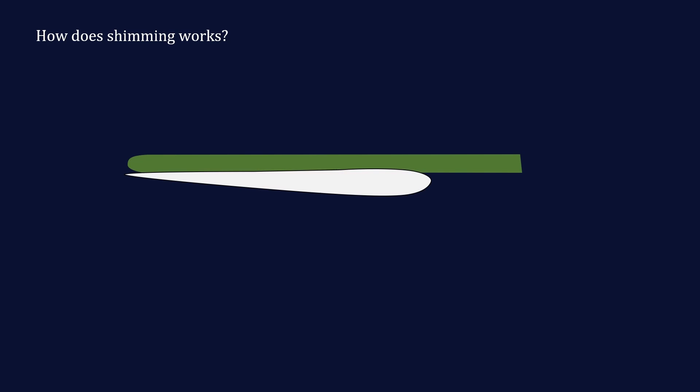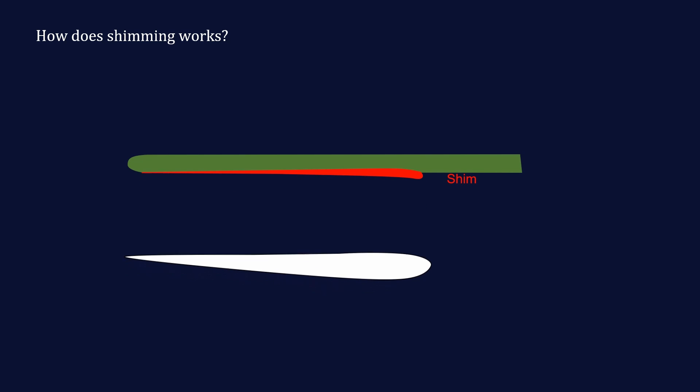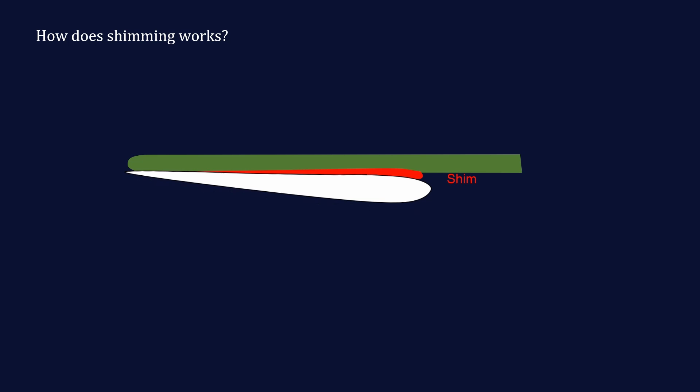A shim is basically a wedge that you put in between the fuselage and the wing. So you will have to remove the wing and place the shim in between the back wing and the fuselage. Due to the shape of the shim, please note that there are positive and negative shims, we will look into that later, the angle in that the wing is mounted on the fuselage will change.